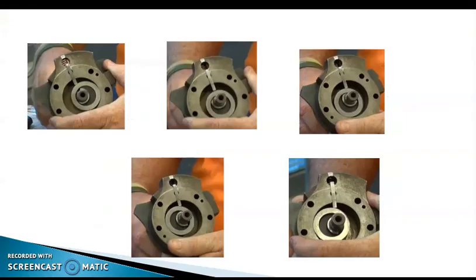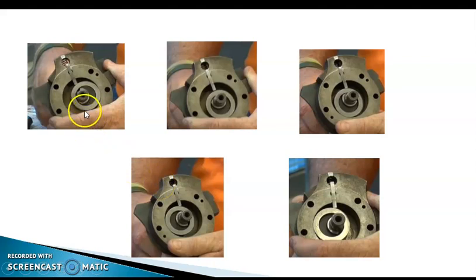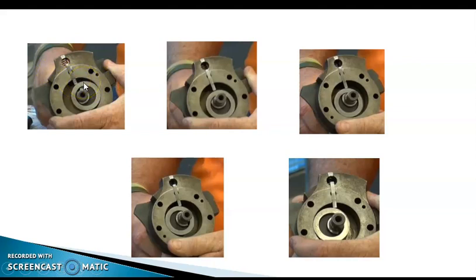Now I am showing a practical video of the single stationary blade type rotary compressor. Here you can observe the rotor shaft, the roller or impeller, and the single stationary blade — sometimes called the sealing blade — which helps the roller always stay in contact with the cylinder wall. This sealing blade moves up and down due to the spring action.